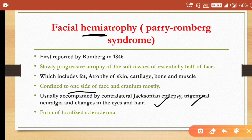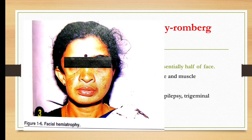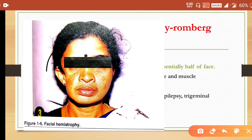This point is very important for MCQs so please note it down. It is also a localized form of scleroderma. This image is directly taken from Shafer's — in image-based questions they can put a similar image from the textbook to help you identify it. You can mark out the atrophy on one side of the face.